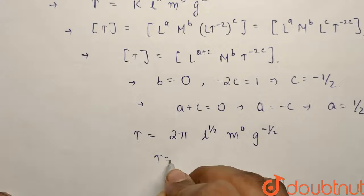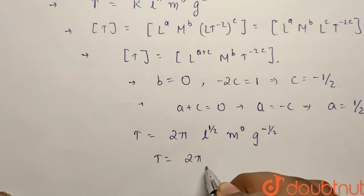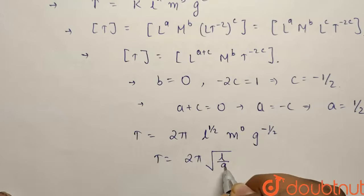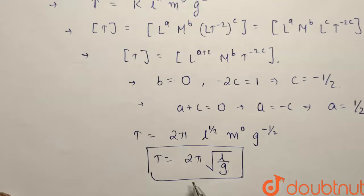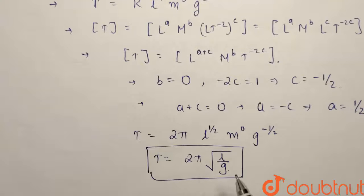So the final time period formula comes out to be 2π times square root of L by g. So this is the original formula. We can replace 2π by k because we don't know the value of k, but as we know the formula so we can directly write k as 2π. So this is the dimension formula for the time period that is 2π square root L by g.